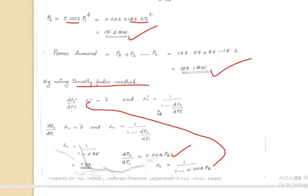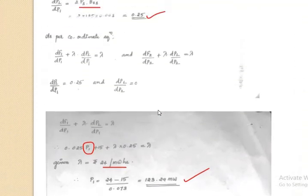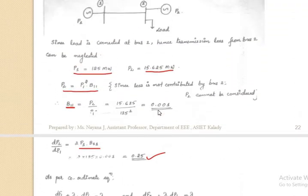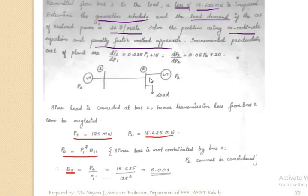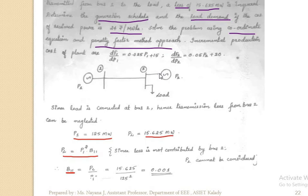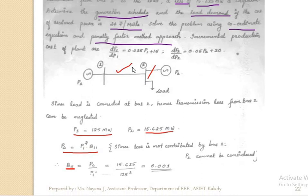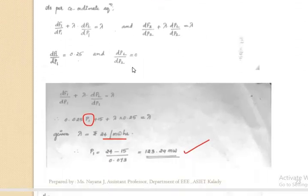This is a previously asked university question. The key thing to understand is the transmission loss equation and why we neglect P2 in the transmission loss. Because the load is connected at bus 2, power from generator 1 must travel the full transmission distance, while power from generator 2 travels only a very short distance to the load. So transmission loss is considered only for generator 1 and neglected for generator 2.